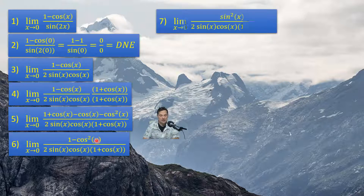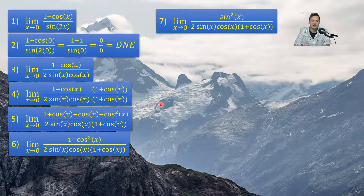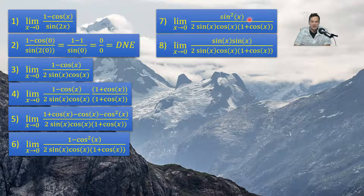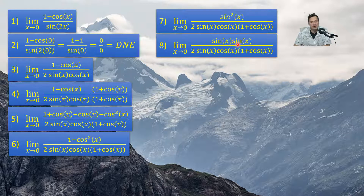When I transition from 6 to 7, I'm going to replace 1 minus cos squared x with sin squared x from the basic Pythagorean identity. It's simply a matter of experience — I've been doing this for a long time. What I'm going to do next is rewrite sin squared x as sin x times sin x. Why? Because on the bottom of step 7 there is a sin x, and on the top I have sin squared x — I want to cancel off whatever I can as a general principle to make things simpler.